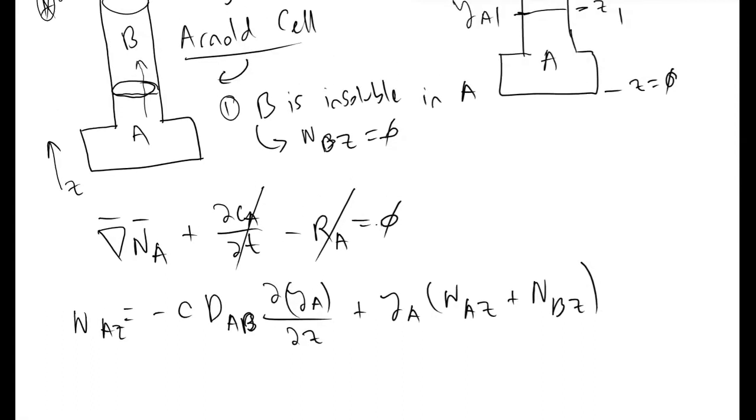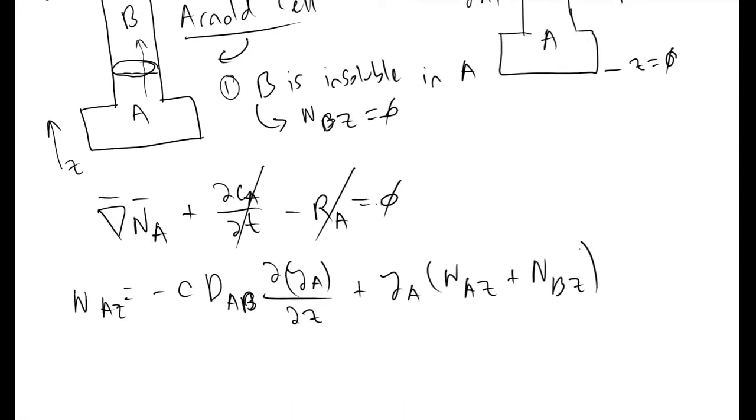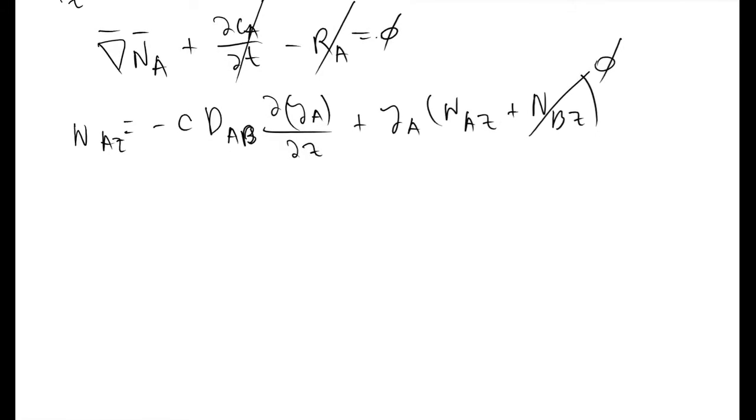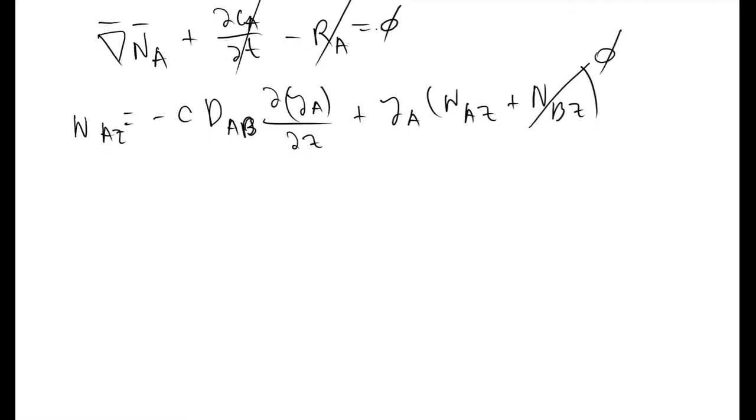We have plus NBZ. And because of this assumption we made earlier, because B is insoluble, we can say that NBZ must be equal to zero. Further simplifying this equation, the flux of A in the Z direction in your Arnold cell is equal to minus C times DAB divided by 1 minus YA times dYA/dZ.